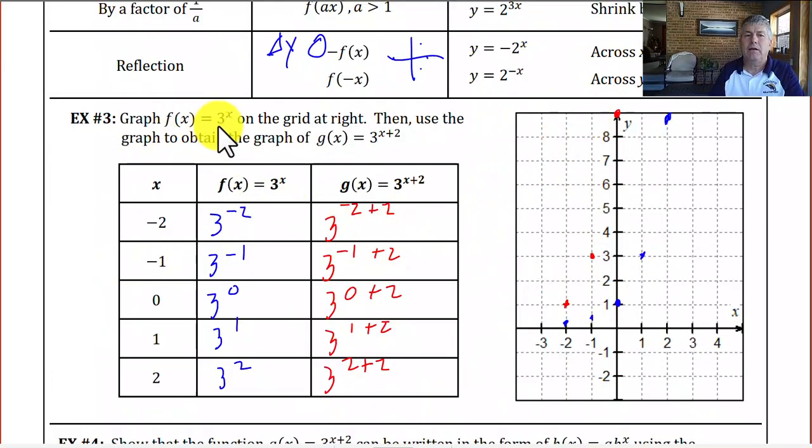In example 3, we've got a function f(x) equals 3 to the x on the grid at the right in blue. So plotting that, 3 to the negative 2 is 1 ninth, and then we have 1 third when x is negative 1. When x is 0, we get an output of 1. When x is 1, we get an output of 3. When x is 2, we get an output of 9. So we've got our exponential growth function with base 3, or if you will, a tripling.